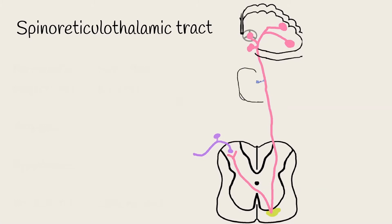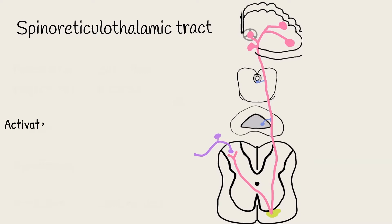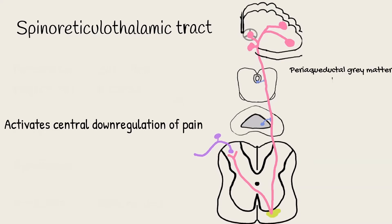As well as its actions at limbic structures, the spinoreticulothalamic tract also sends out projections which can activate central pain suppression mechanisms. Such regions are at the periaqueductal grey matter (PAG) and in the central ventral medulla.